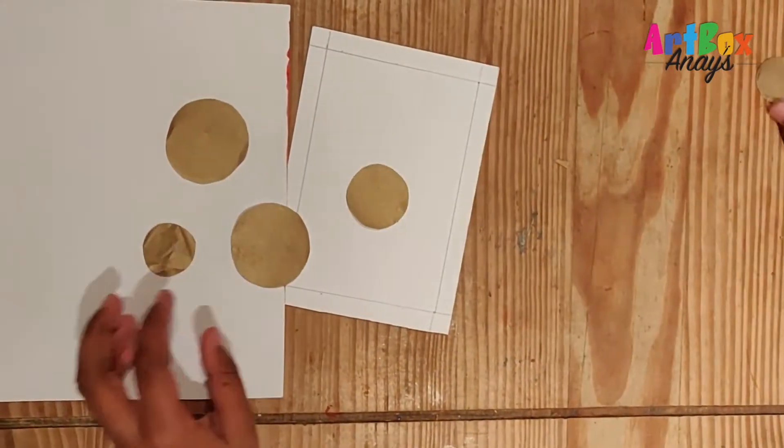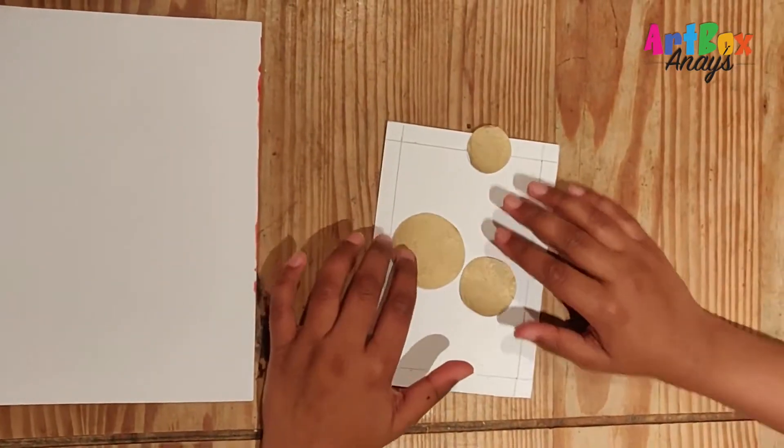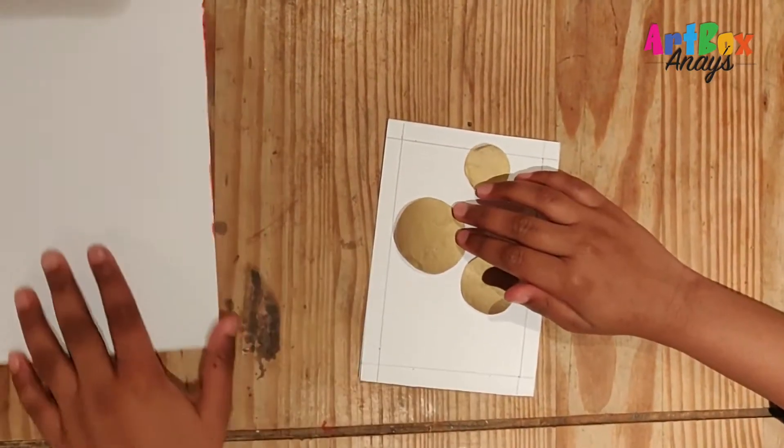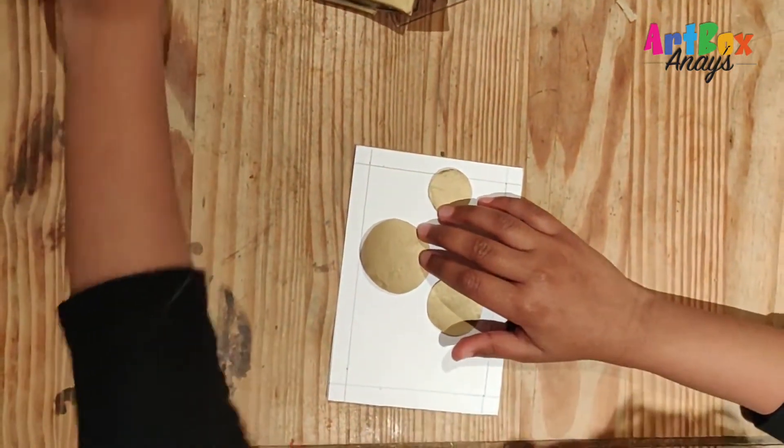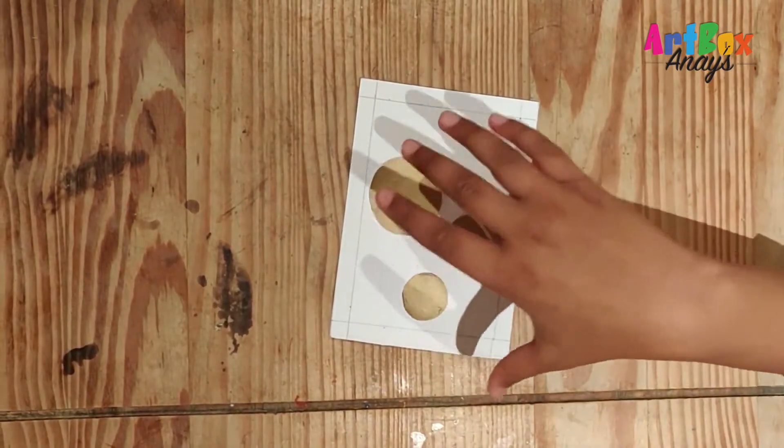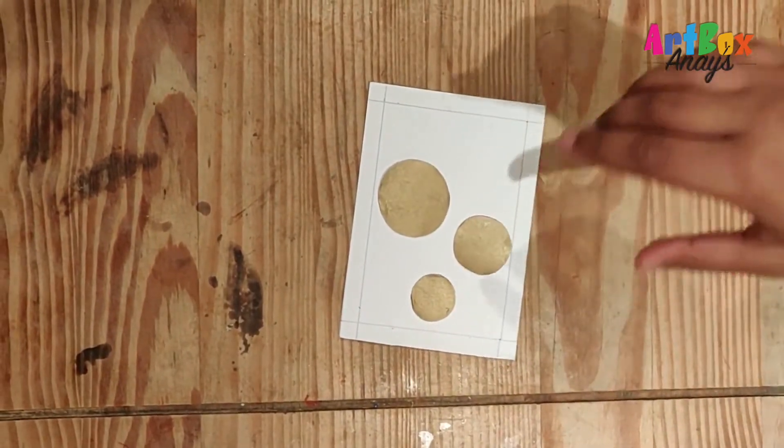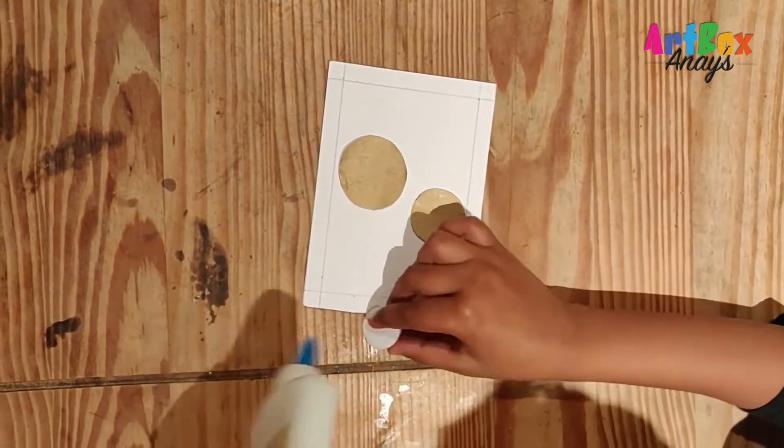And then I'm going to cut them like those I have done over here. And now what we're going to do is stick some of them like anywhere you want to. Now I have arranged the circles and now what I'm going to do is take a glue and just stick them.